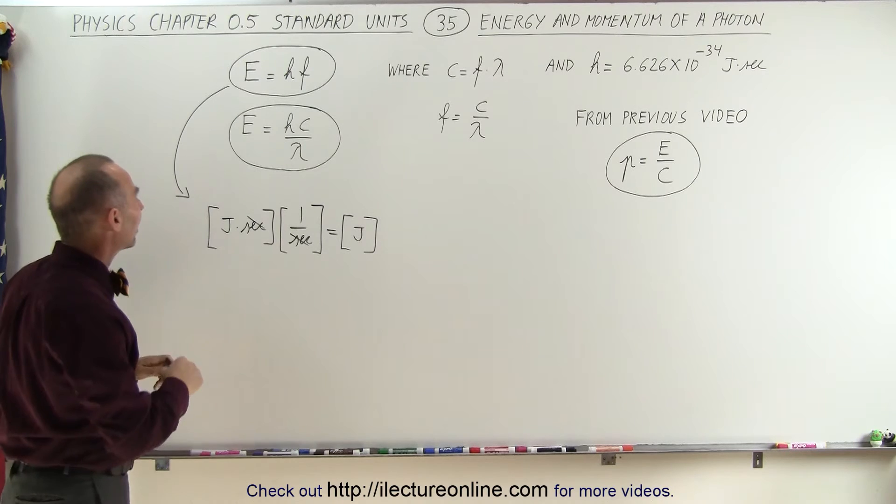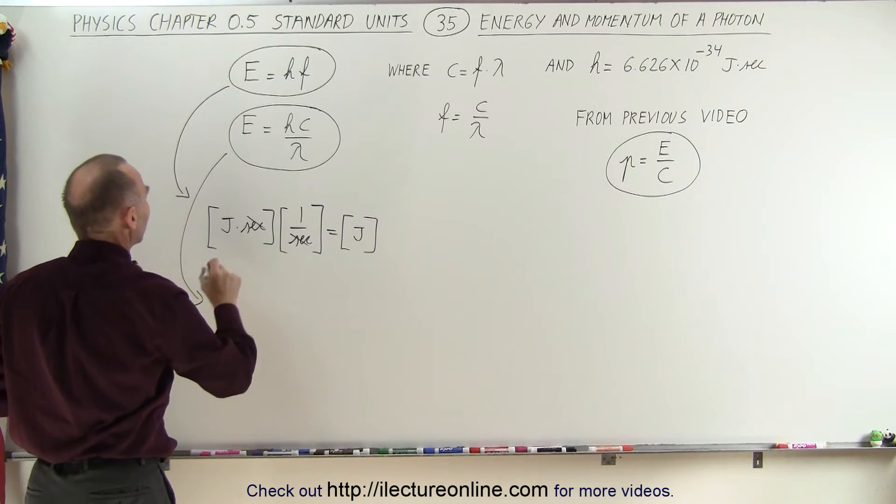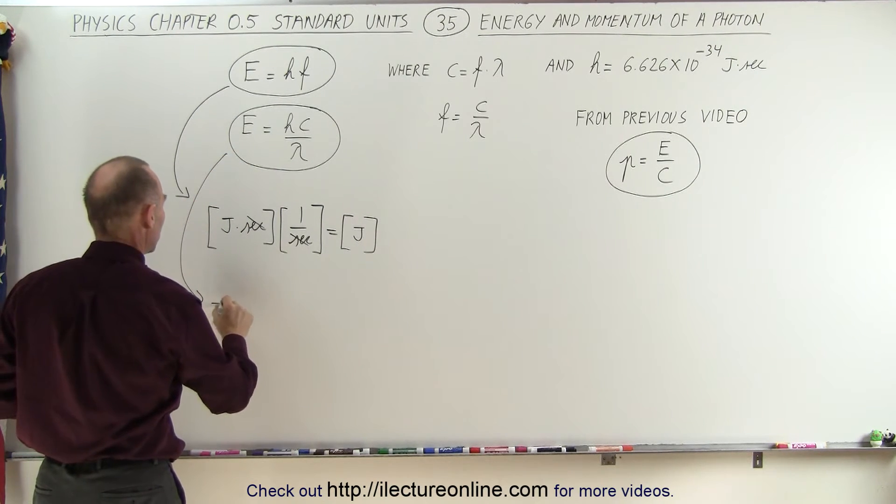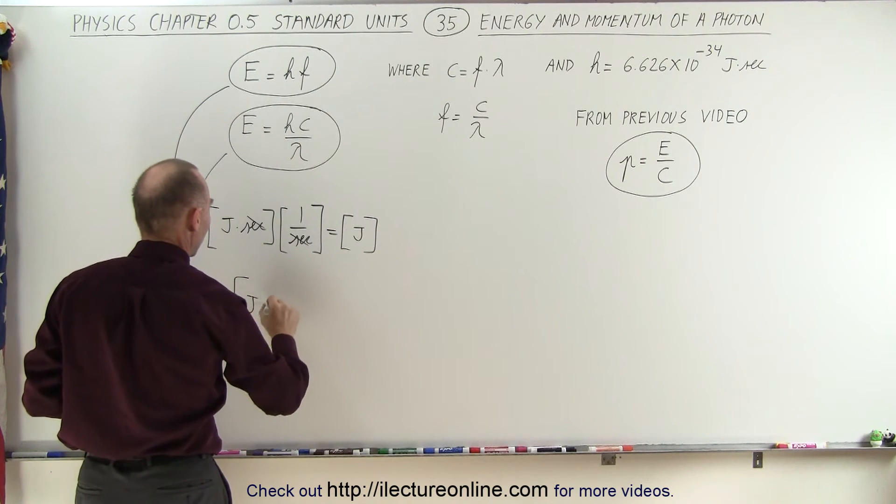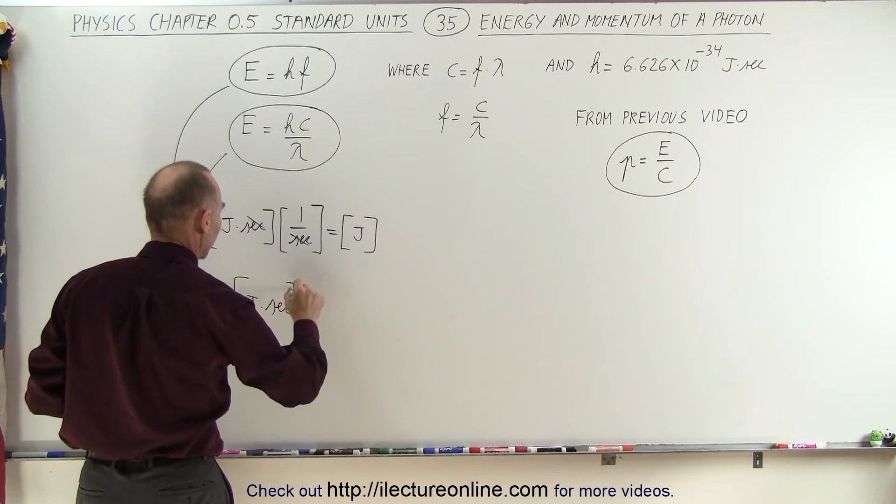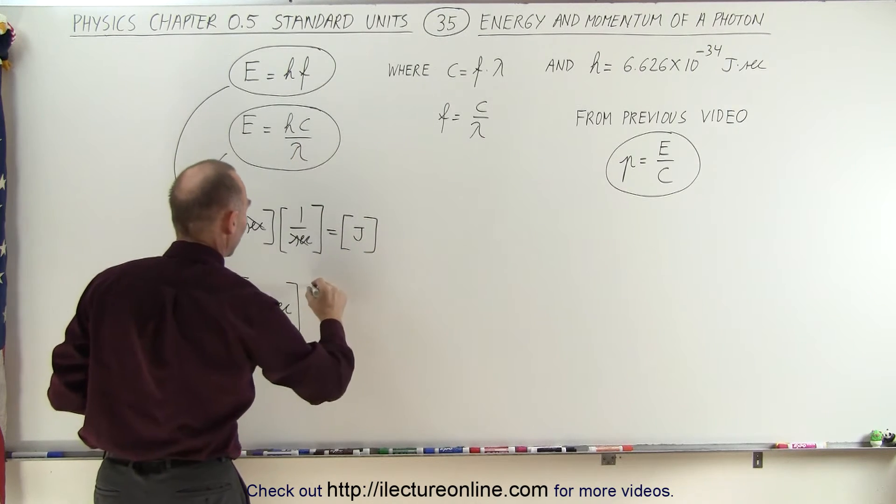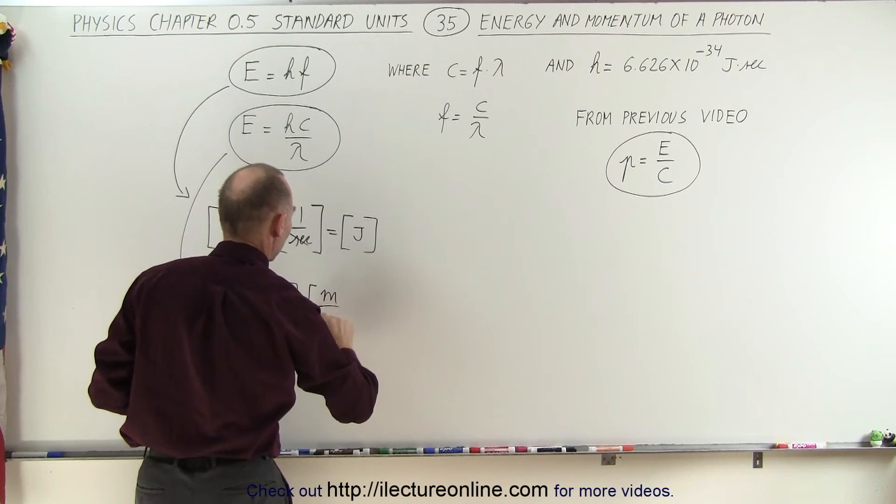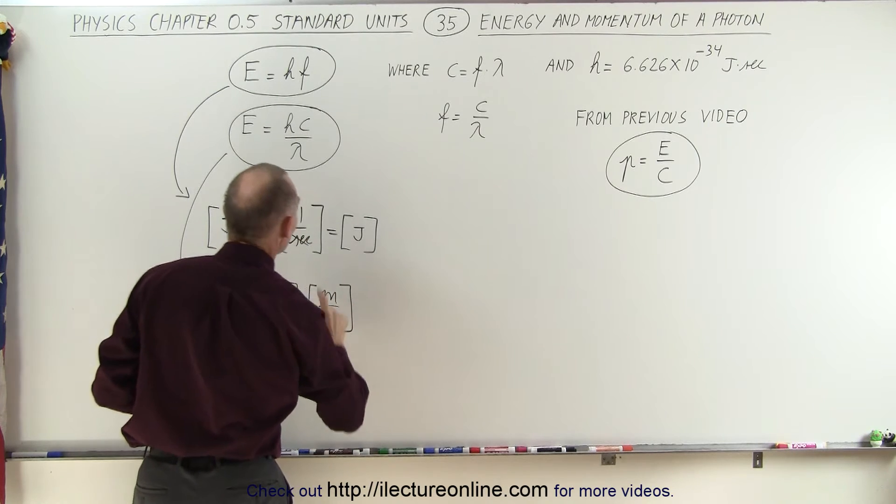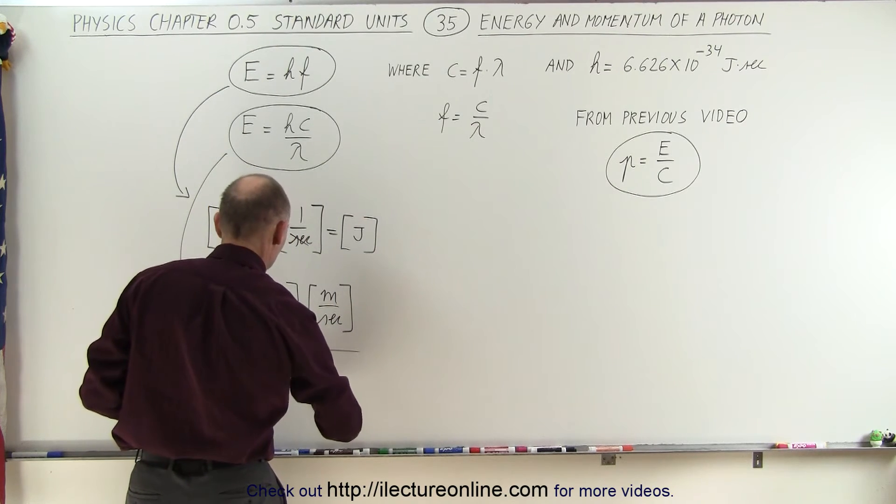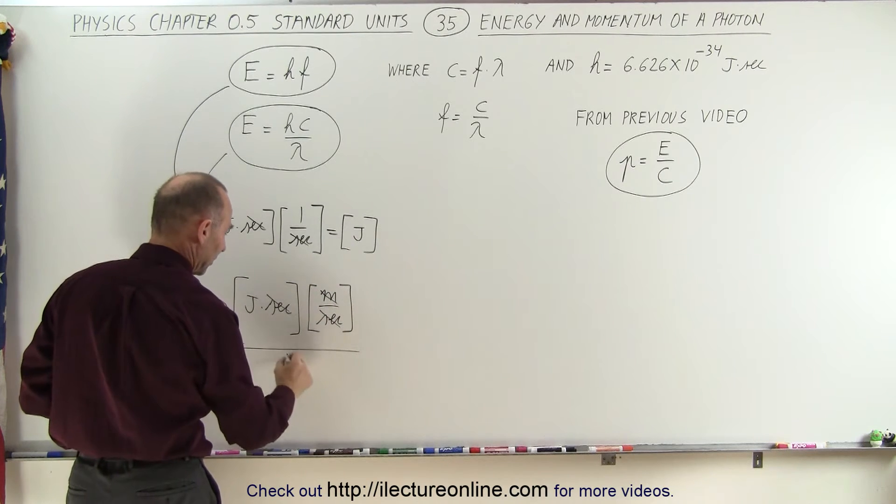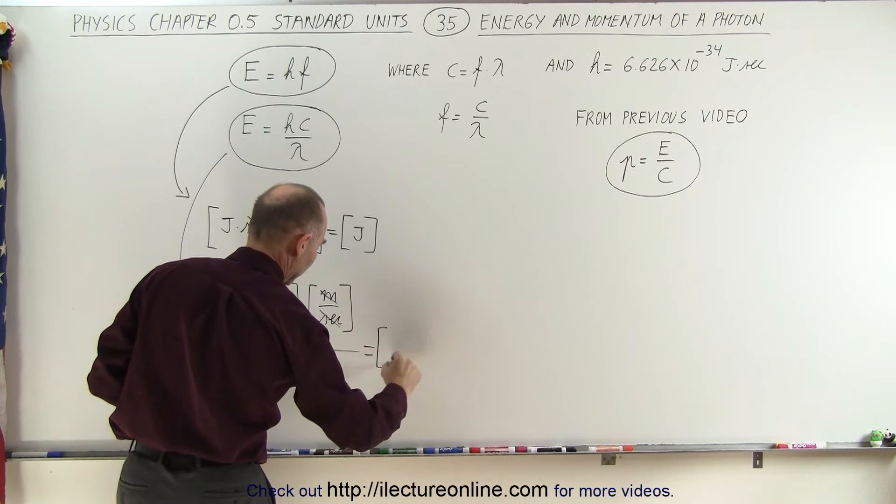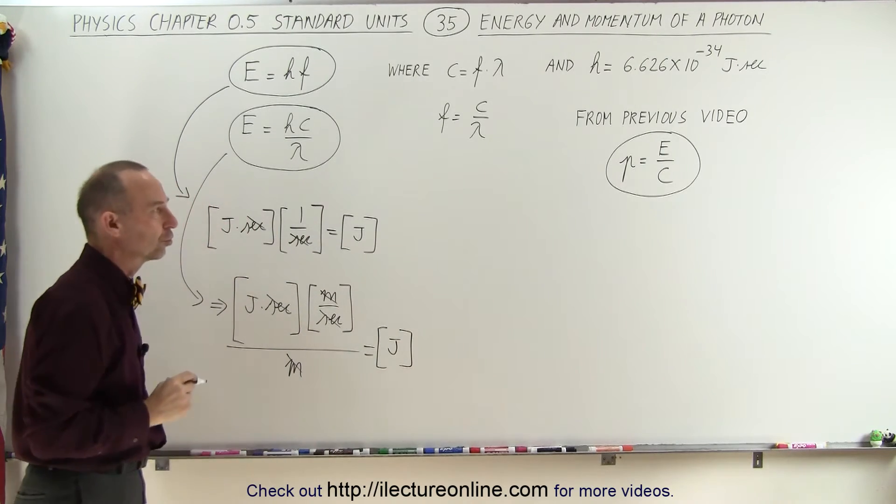If we take the second equation, we should of course get the same thing. So we have, in units, Planck's constant, joules times seconds, times the speed of light, which is meters per second. And then we divide it by the wavelength, which is meters. Notice that seconds divided by seconds, meters divided by meters, and sure enough, we again get the units for energy, joules.